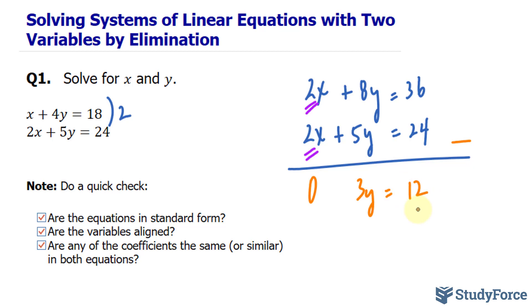What we have in orange is a simple equation which we can solve. Now we have y is equal to 12 divided by 3 and we get 4. So the value for y will satisfy both of these equations, although we still need to find the value for x.